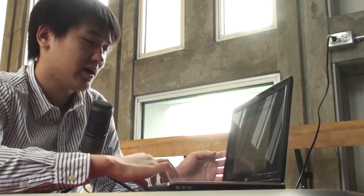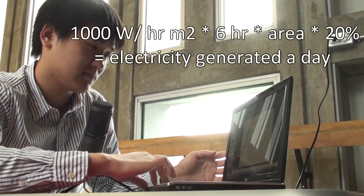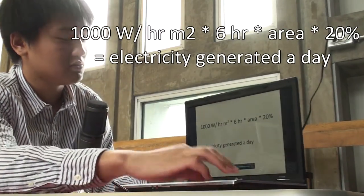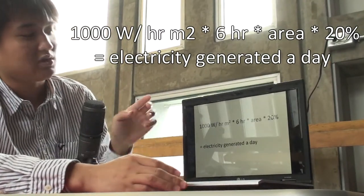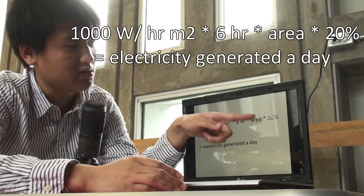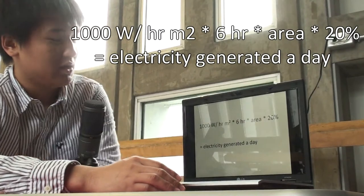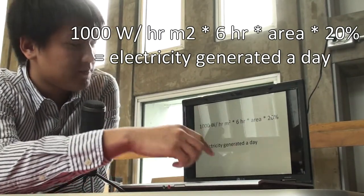By studying this principle, we can know how much electricity is produced per day by solar panels. If we look at this formula: 1,000 watt-hour per meter square times 6 hours times area times 13 percent equals the electricity generated a day.